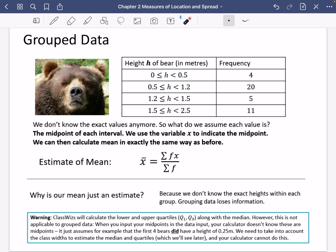20 of them were between 0.5 and 1.2 meters, 5 blah blah blah, 11 blah blah blah. So we don't know the exact values anymore. All we know is that there were 20 bears that were between 0.5 meters and 1.2 meters. So what do we assume that each value is? We assume that each value is the midpoint of each interval.